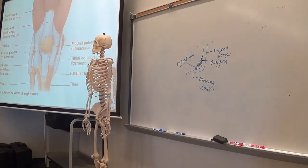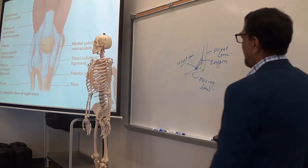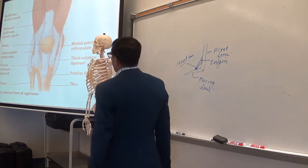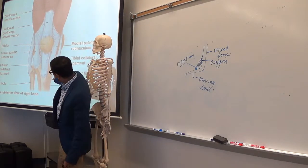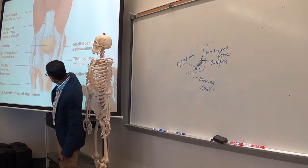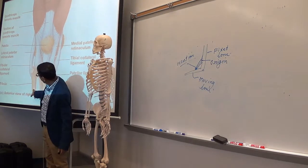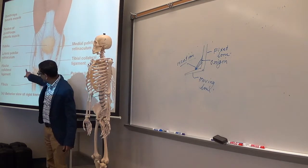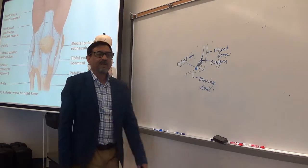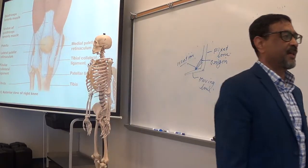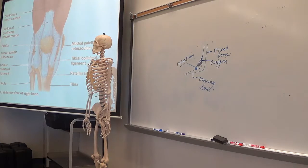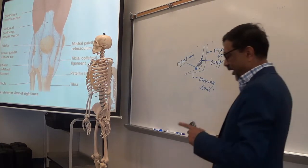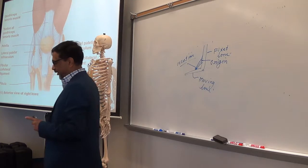And then beside them, for the lateral side, you have a collateral ligament. The one attached to the tibia is the tibial collateral. The one attached to the fibula is the fibular collateral ligament. So, those are some tendons, ligaments, and retinaculum. You see, all these structures are the same — fibrous connective tissue structures.